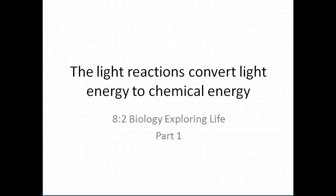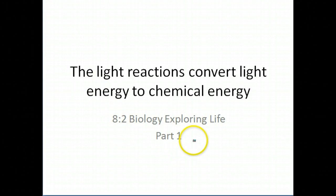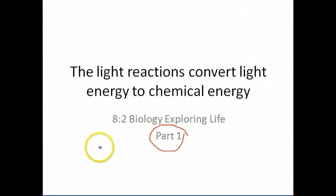We're on to section 8.2 of chapter 8. Continuing with photosynthesis, we're going to get into some of the mechanisms behind how photosynthesis actually works. I'm going to do this in two parts because the actual process of light reactions can get a little complicated. For now, we'll talk about light, how the chloroplast reacts to light, and how the photosystem — the basic unit of photosynthesis — works.